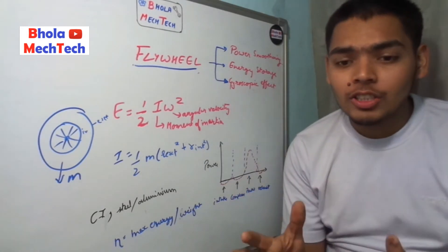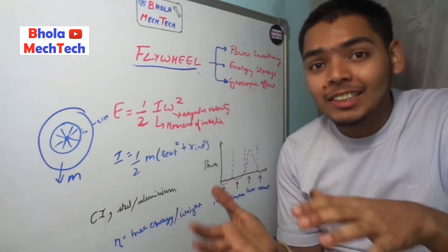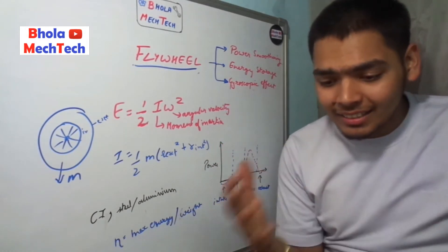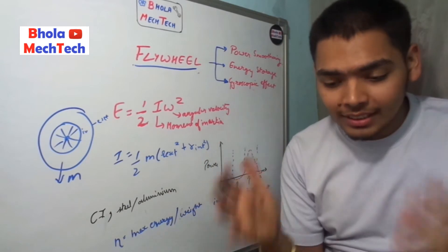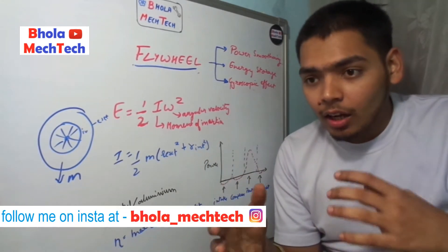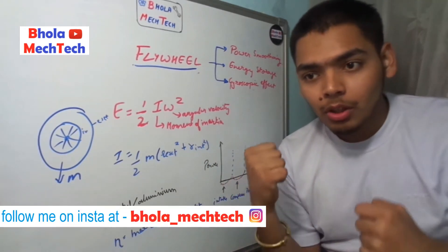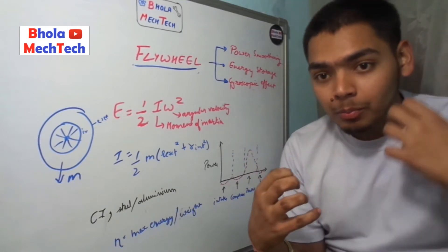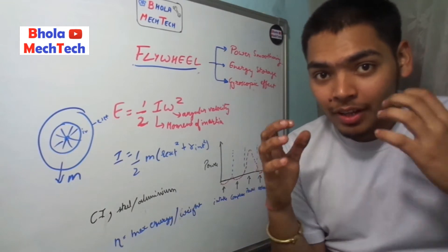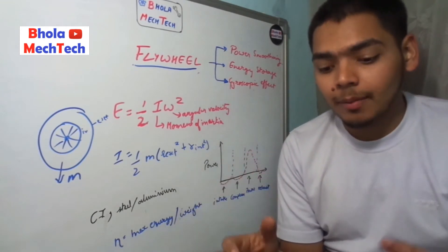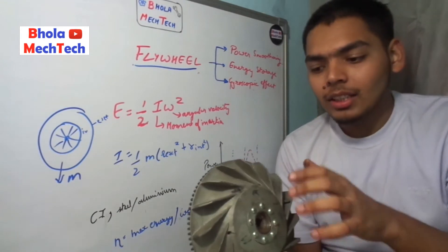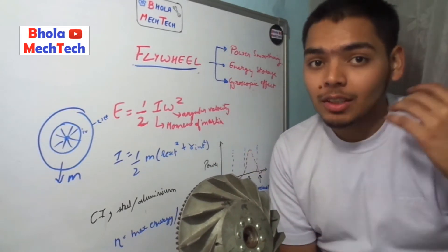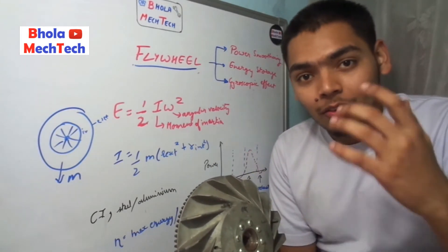The flywheel stores the energy using its moment of inertia. Moment of inertia is another concept that requires understanding. It's something like if you are rotating something, because of its mass it has some moment. Since it is in rotational motion, we call it moment of inertia. Because of its mass it will try to keep on rotating, but due to friction it will eventually come to rest.